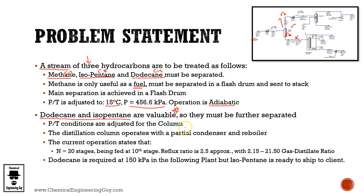We have a pressure changer and then a distillation column which operates with a partial condenser and a reboiler. The current operation specifies 20 stages, fed at the 10th stage, with a reflux ratio of 2.5 molar-to-molar and a bottoms-to-distillate ratio of 2.15.